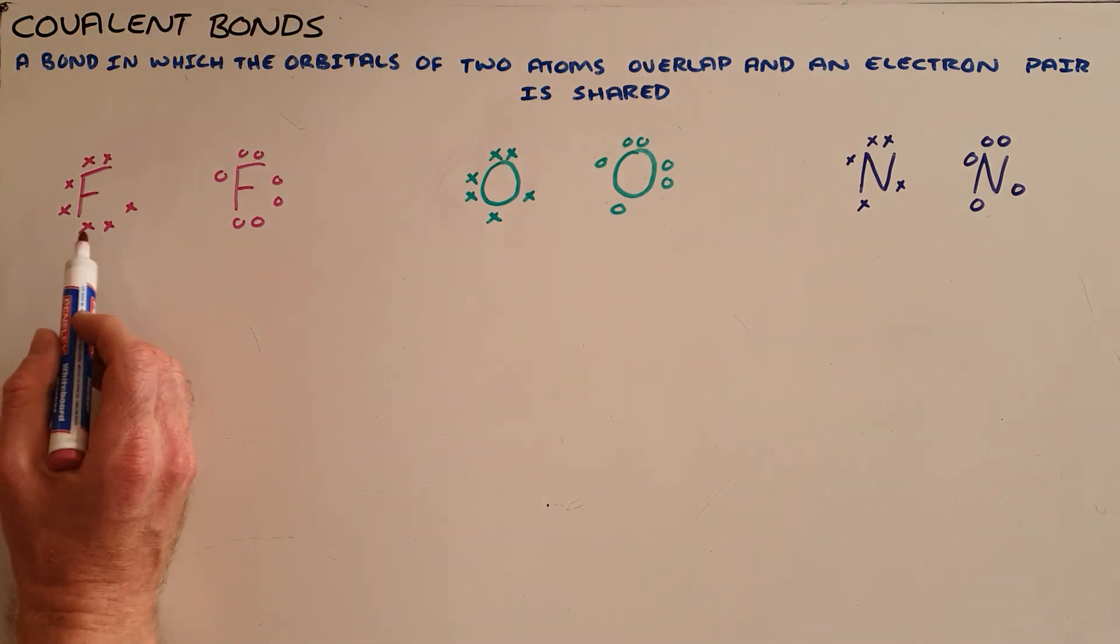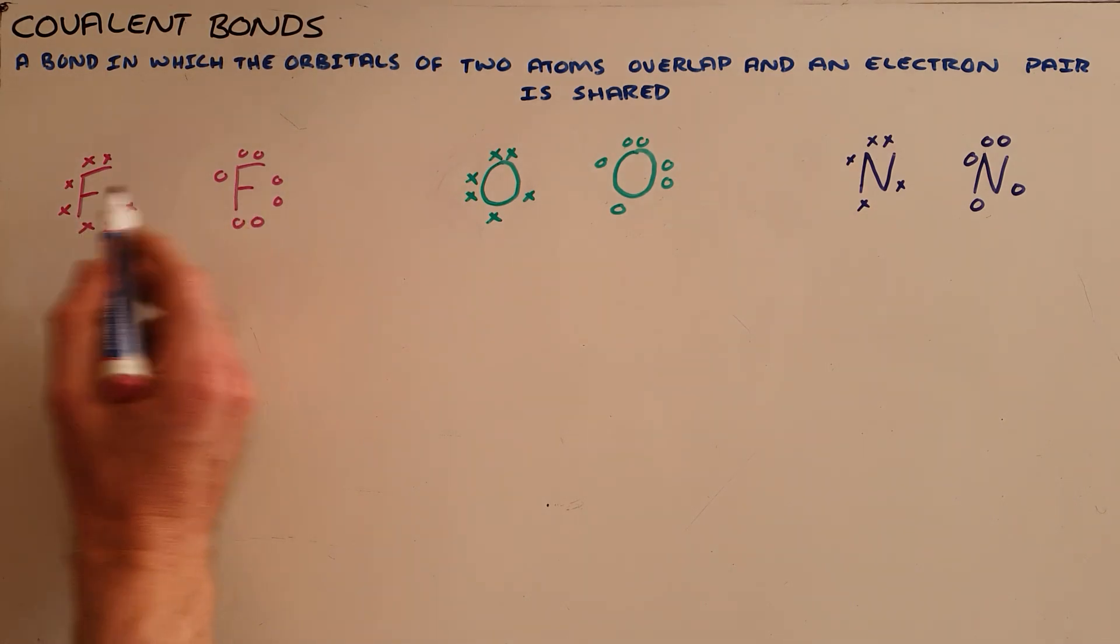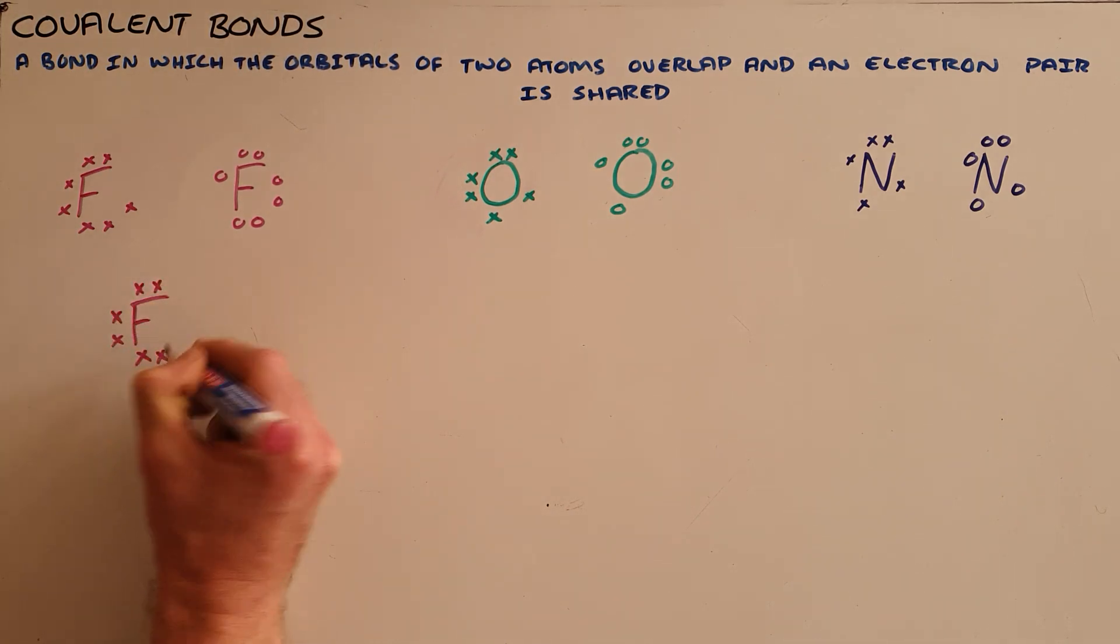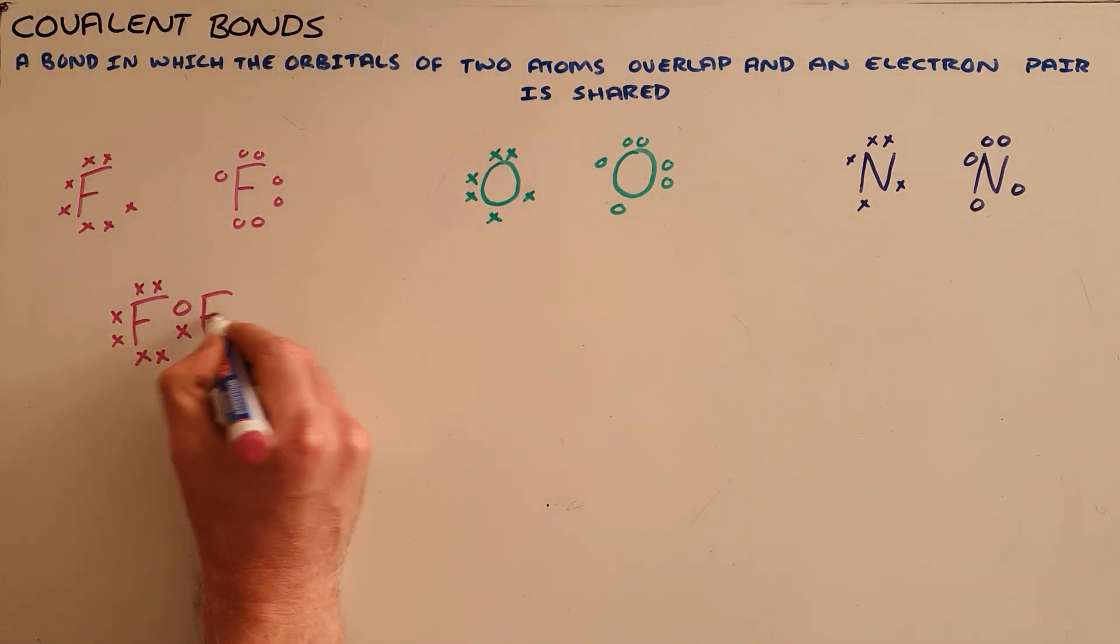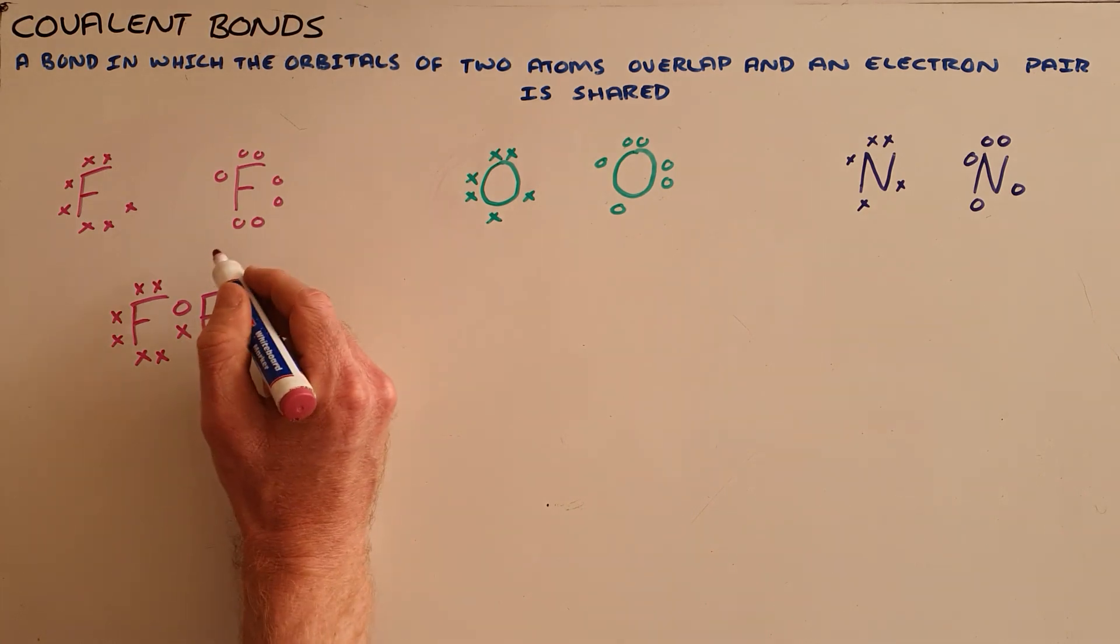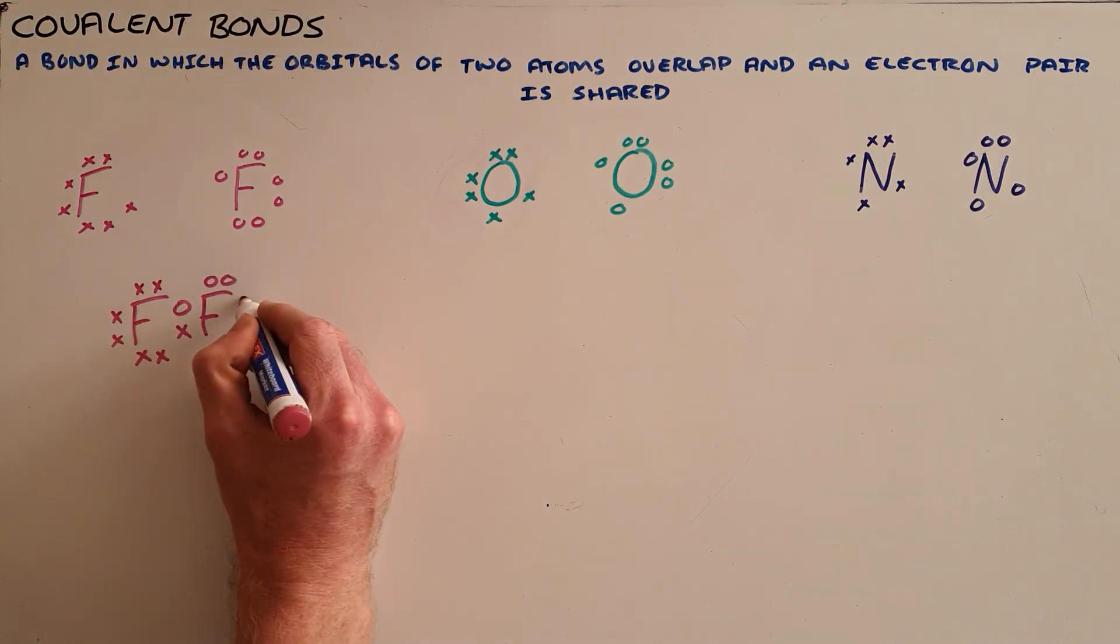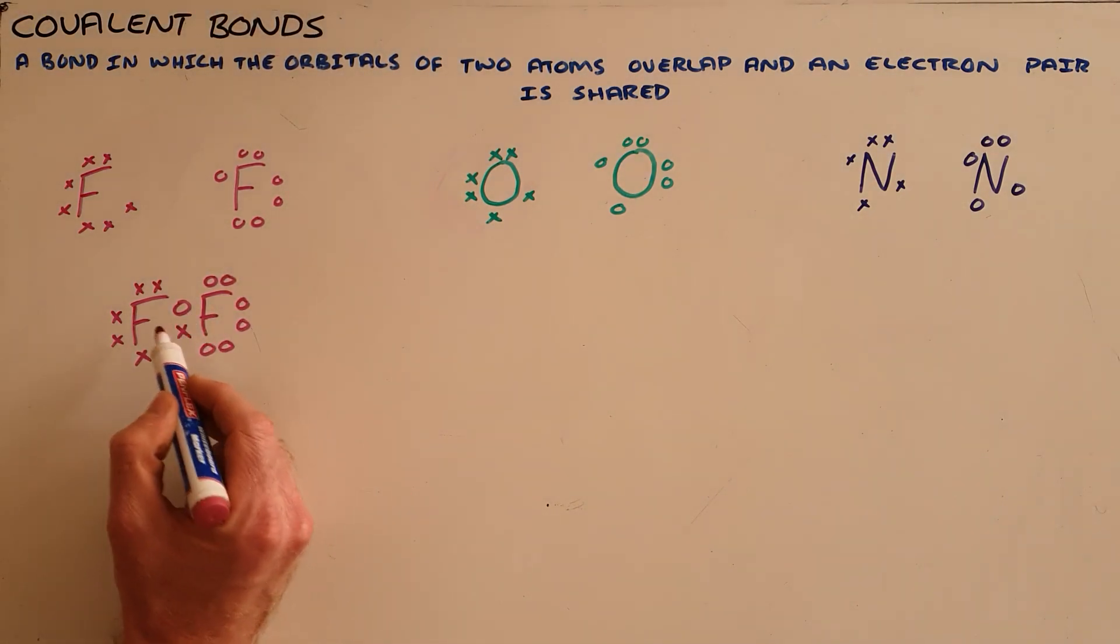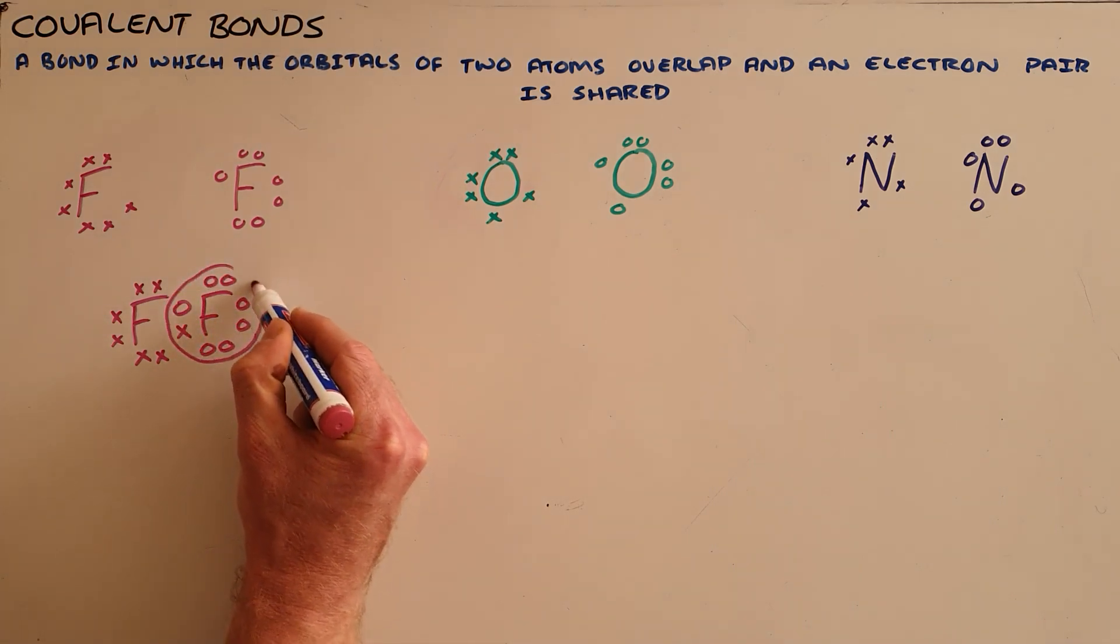So what we can see here in the case of fluorine, which has seven valence electrons, is fluorine will form a covalent bond with itself and it does that by each atom sharing one of its valence electrons. I have drawn the electrons belonging to each fluorine atom with different symbols so that we can see that each fluorine atom still has its original seven electrons, but because they now share that pair of electrons between them.